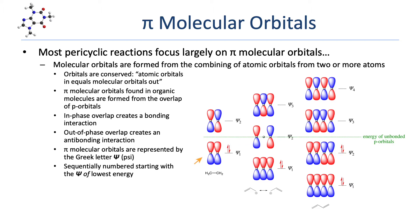On the left, we see the pi molecular orbitals of ethene. Each of the two sp2 carbons contributes a p-orbital to the system, giving two pi molecular orbitals. Psi-1 is a bonding molecular orbital formed from the in-phase overlap of p-orbitals. Psi-2 is an anti-bonding molecular orbital formed from the out-of-phase overlap of p-orbitals. In the center, we see the pi molecular orbitals of the allylic carbocation. The three sp2 carbons each contribute a p-orbital to the system, giving three pi molecular orbitals. Psi-1 is a bonding molecular orbital, Psi-2 is a non-bonding molecular orbital,